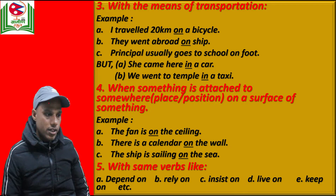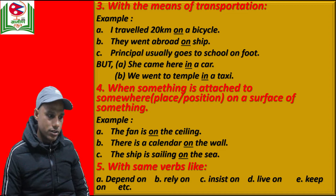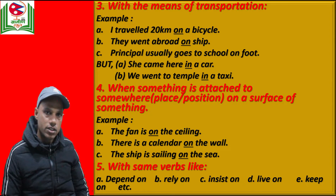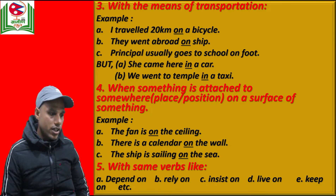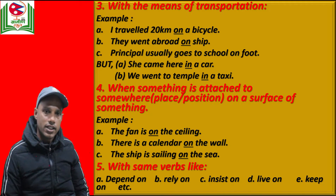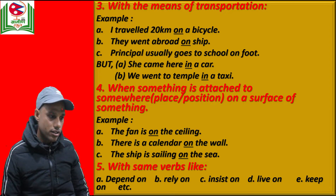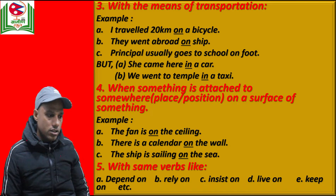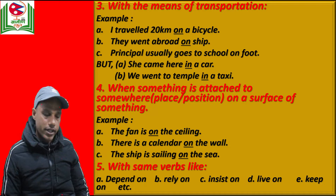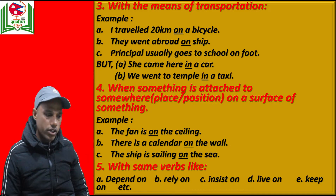The next condition is when something is attached to a surface or position — we use preposition 'on'. For example: the book is on the table (on the surface of a table). The fan is on the ceiling. The ship is sailing on the sea. So: on the ceiling, on the wall, on the table. Additionally, some verbs go with preposition 'on', such as: depend on, rely on, insist on, live on, keep on, etc.